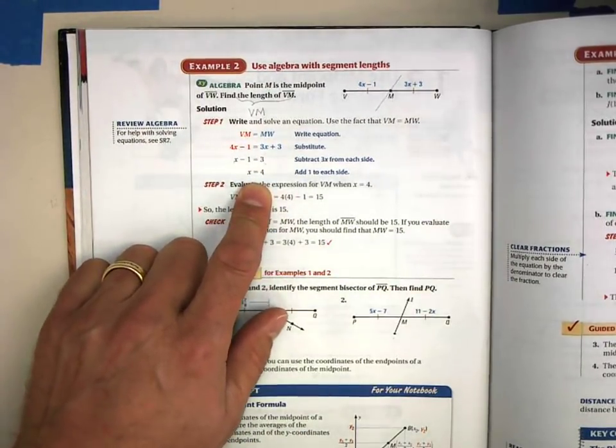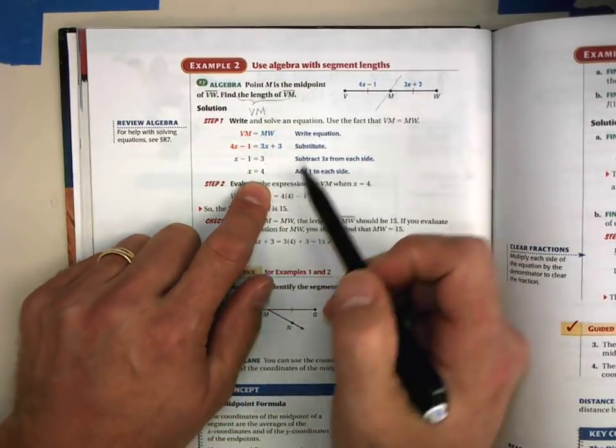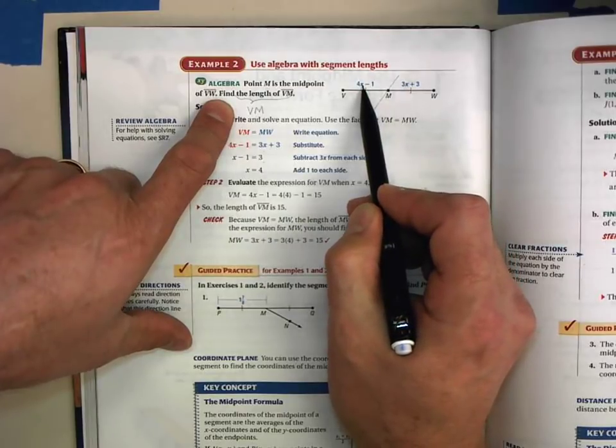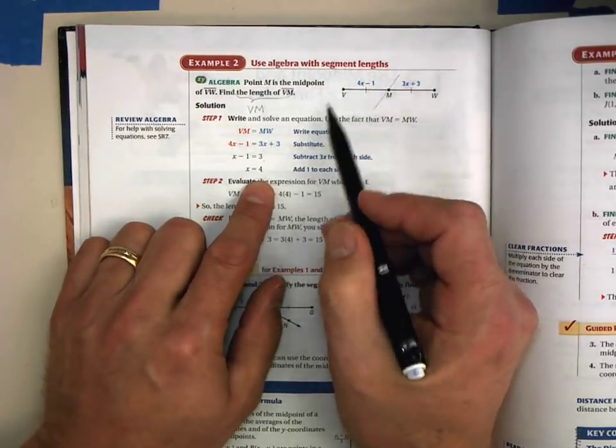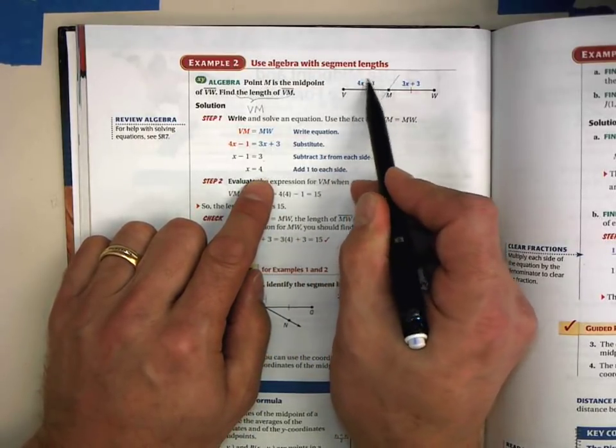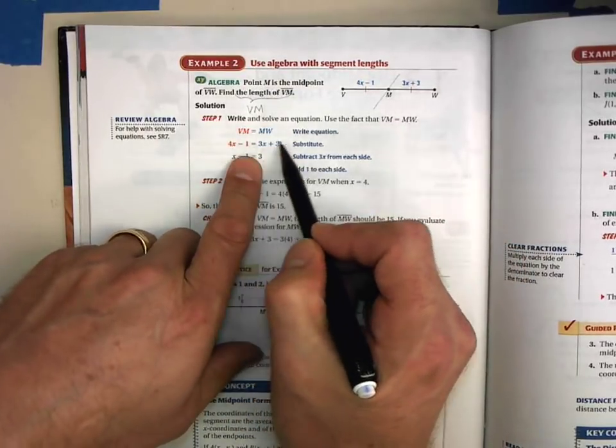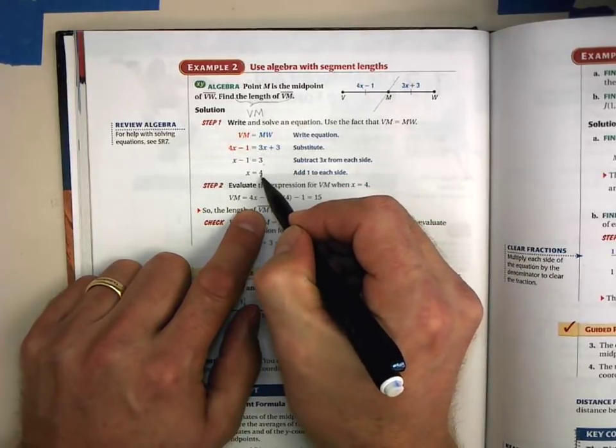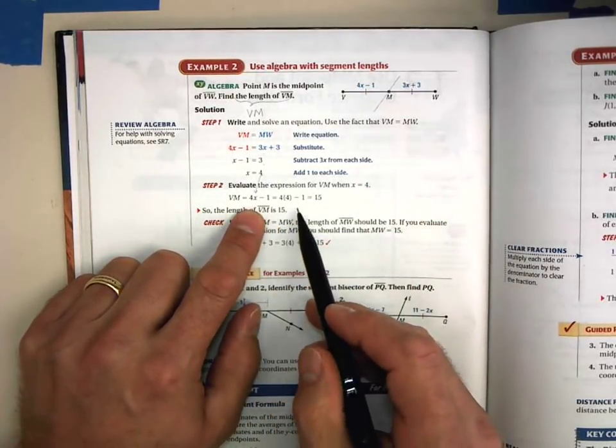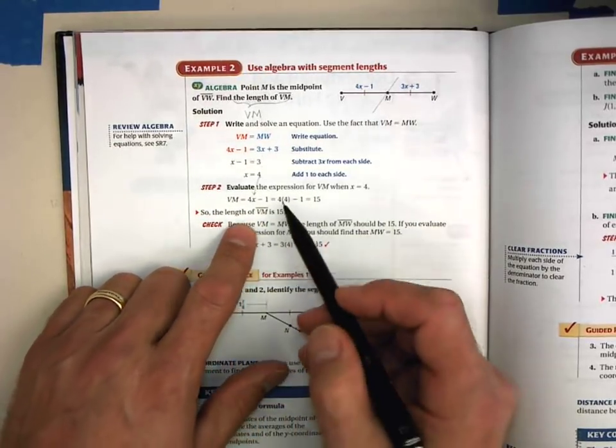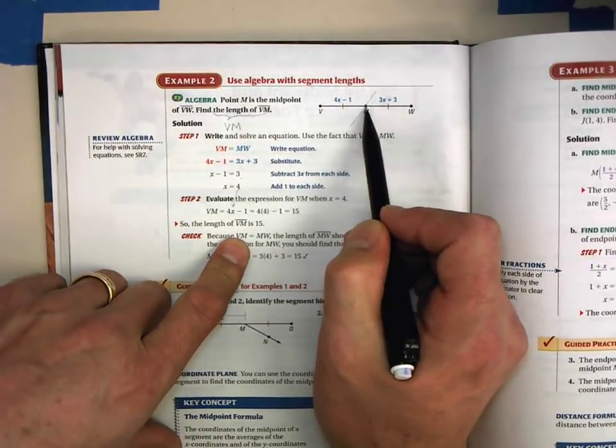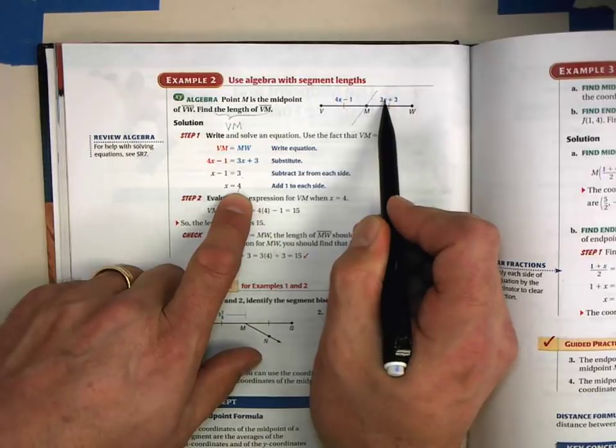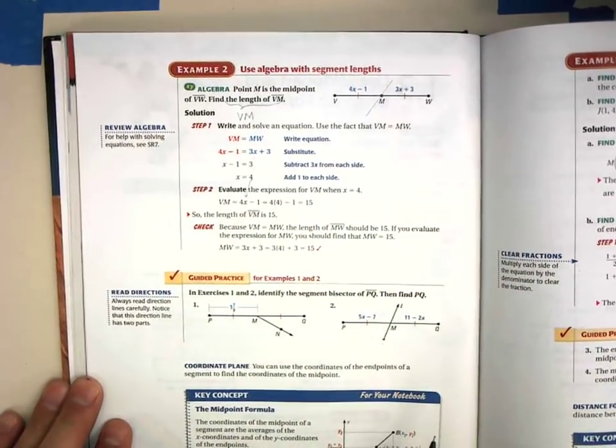Yes, x does equal 4. But that's not the answer. Let's go back to the question. What were they asking us for? They said, find VM. Oh, that's right. I don't want to know x. I want to know VM. So I know that x is 4. All I have to do is plug in x into this expression. Remember, this is an expression, not an equation. This guy here is an equation because it has an equal sign. But here, that's just an expression because there's no equal sign. So let's plug 4 into our expression. And we get 4 times 4 minus 1, which is 15. And they're telling us here we could check that. Since we know this is a midpoint, these two segments are congruent. This dude ought to be the same length. So let's plug in 4, x equals 4, into here. 3 times 4 is 12. 12 plus 3 is 15. It matches. What do you know? The math works.